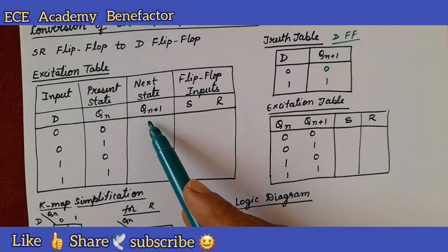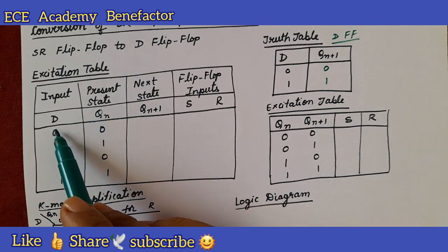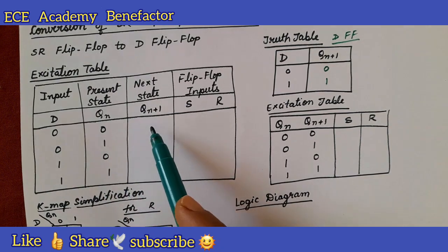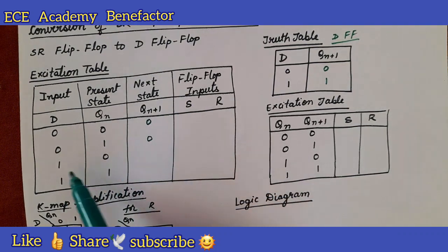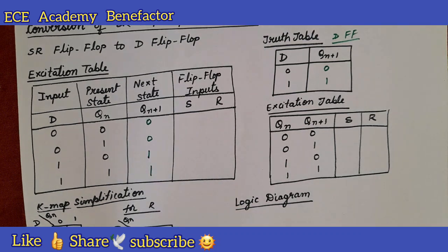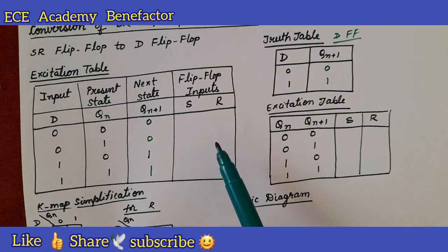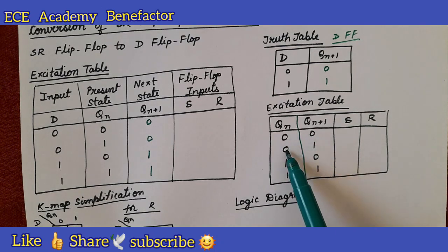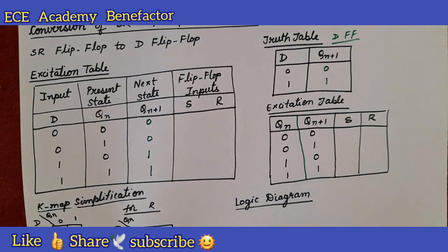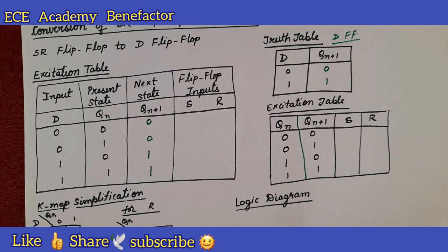Now let us fill the next state column using the truth table of the D flip flop. The next state does not depend on Q_n — whatever is the D input is replicated at Q_{n+1}. So when D is 0, Q_{n+1} is 0; when D is 1, Q_{n+1} is 1. We have now written the next state. To fill the flip flop inputs we need the excitation table of the SR flip flop, with Q_n and Q_{n+1} combinations: 0 0, 0 1, 1 0, 1 1.